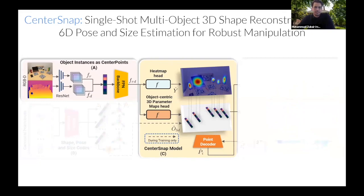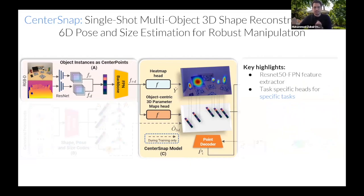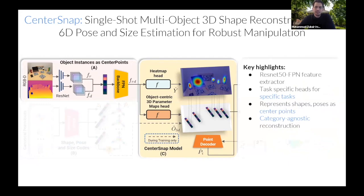For the specifics of each block: we use a ResNet FPN backbone to get low-resolution features and learn multi-scale features from both RGB and depth modalities. We use task-specific heads — one for each instance map prediction and one for object-centric 3D map prediction. Finally, a single 3D decoder allows us to perform category-agnostic reconstruction, learning a single neural network for all instances in our database.